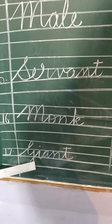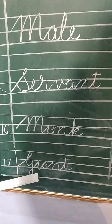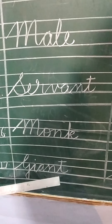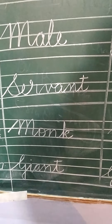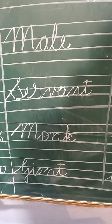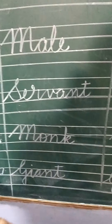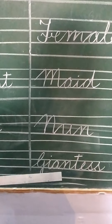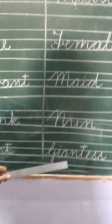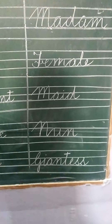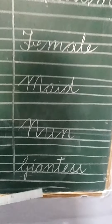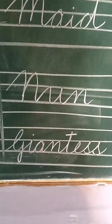Number 17 is giant. G-I-A-N-T, giant. Giant means a monster. And the female version of giant is giantess. G-I-A-N-T-E-S-S, giantess.